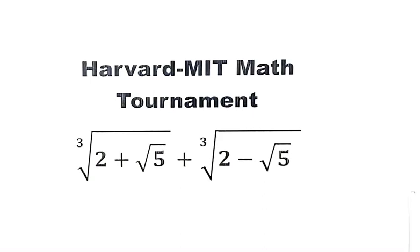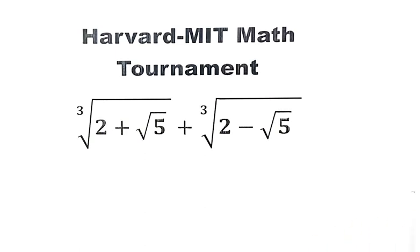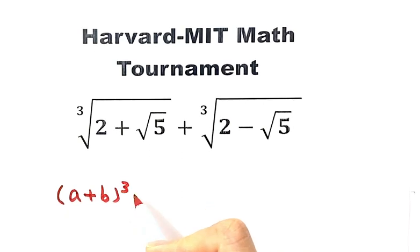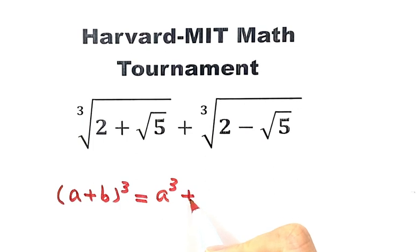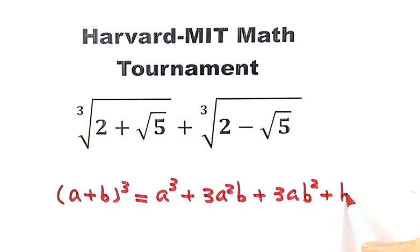In this video, we'll be solving a question from the Harvard-MIT math tournament. The question is to evaluate the sum of two cube roots. First, let's put down the formula that we're going to use: (a + b)³ equals a³ plus 3a²b plus 3ab² plus b³.